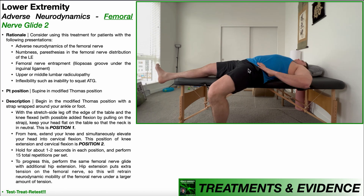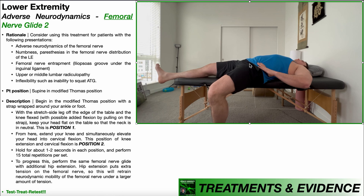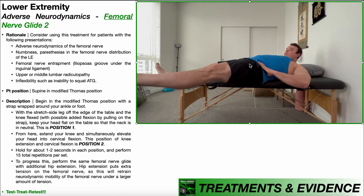Once the patient's quadriceps — in particular the rectus femoris — and the iliopsoas at the hip joint are relaxed enough, then we will do the femoral nerve glide. Right here, we're already in position one. So we would be doing a left femoral nerve glide. The stretch-side leg is off the edge of the table and gravity is just doing its job, and my neck is in neutral. So this is position one.